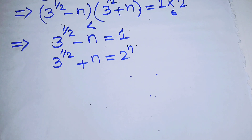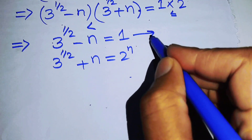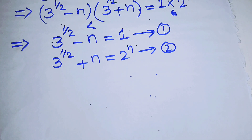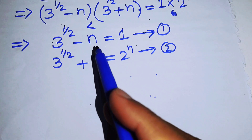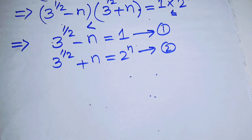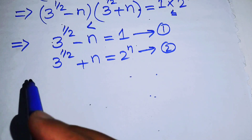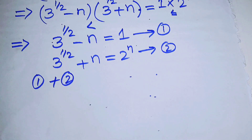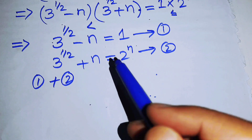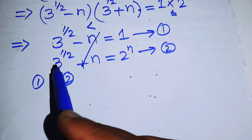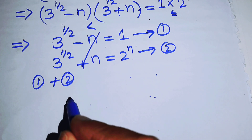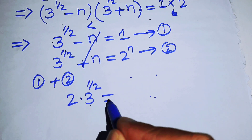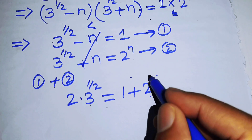Now we have two equations and we can solve them to find the values of n. When we add the two equations, we will eliminate n on the left hand side and easily isolate n on the right hand side. Adding equation 1 and equation 2, we cancel two terms and add the remaining terms, obtaining 2 times 3 to the power of 1/2 equals 1 plus 2 to the power of n.